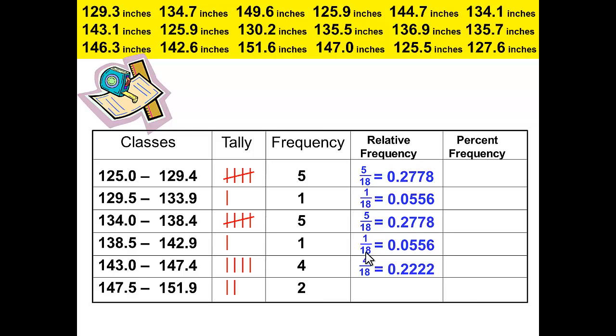4 over 18 equals 0.2222 and 2 over 18 equals 0.1111. Unlike previous examples, these were repeating non-ending decimals, so we rounded to four decimal places. Now we're ready to complete the percent frequency distribution column. To do this we change the relative frequency decimal to a percent by moving our decimals two places to the right. We want to have two places after the decimal for our percent accuracy, and so we need four decimal places in our decimals.